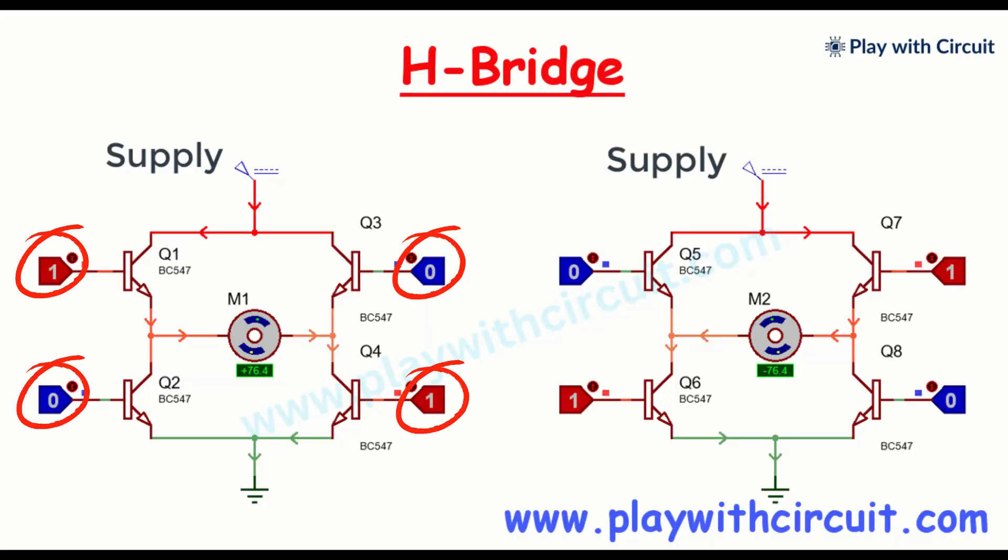It consists of four switch elements, typically transistors arranged in a configuration that resembles the letter H. By turning ON and OFF two opposite switches, the H bridge can reverse the polarity of the voltage applied to the motor, effectively changing its direction.